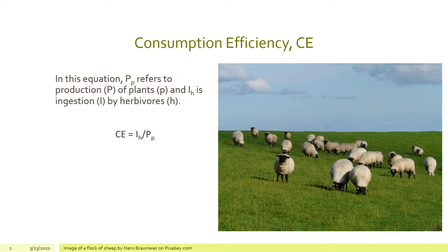Imagine a flock of fluffy sheep grazing in a field. These sheep won't eat all of the grass. Even if they eat some of each piece of grass, there will still be some of the roots and stubble remaining. When we talk about consumption efficiency, we're referring to how much of the plants are consumed or ingested by the sheep.